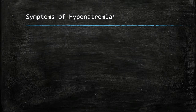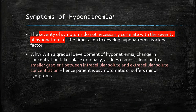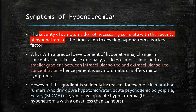The severity of symptoms does not necessarily correlate with the severity of hyponatremia — the time taken to develop hyponatremia is key. With the gradual development of hyponatremia, changes in concentrations and osmosis take place gradually, resulting in a smaller gradient between intracellular and extracellular solute concentration, meaning the patient has little symptoms. However, if this gradient is suddenly increased — for example in marathon miners who drink pure hypotonic water, acute psychogenic polydipsia, or ecstasy use — you develop acute hyponatremia.